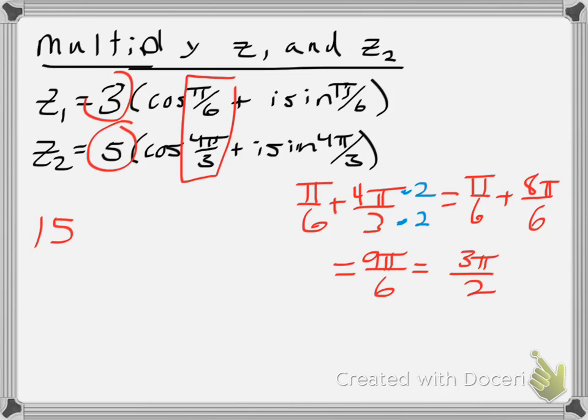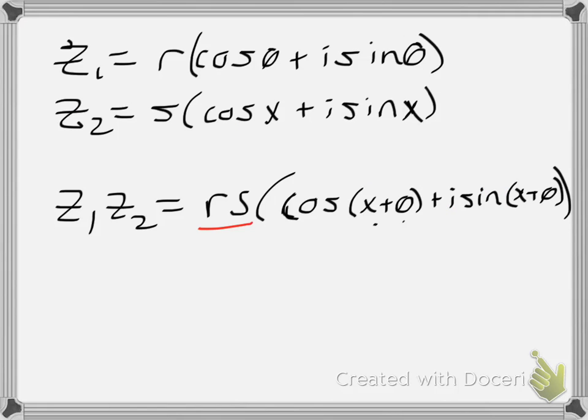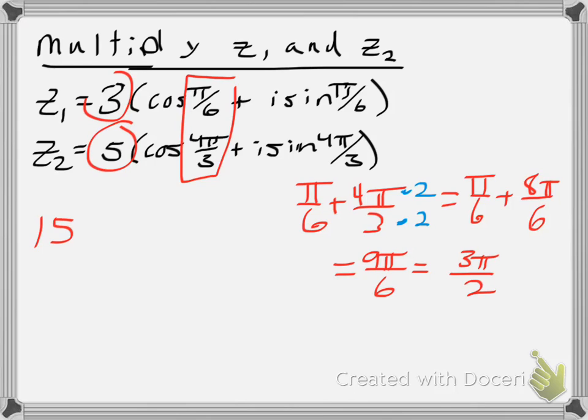So now I have my r times s. I have my x plus theta. And now I'll put it into the proper form, which will be 15 times the quantity cosine of 3 pi over 2 plus i sine of 3 pi over 2.